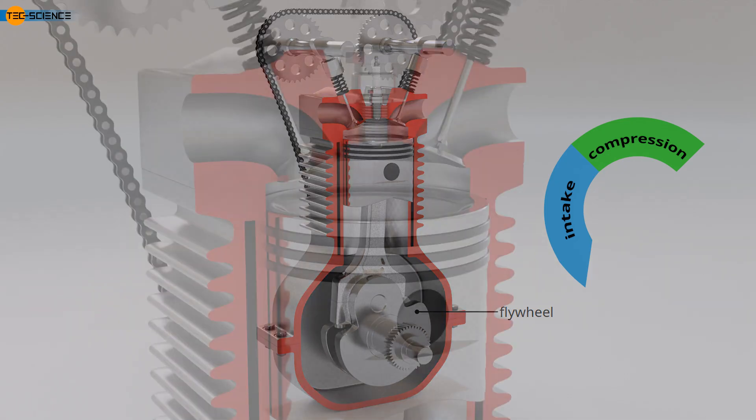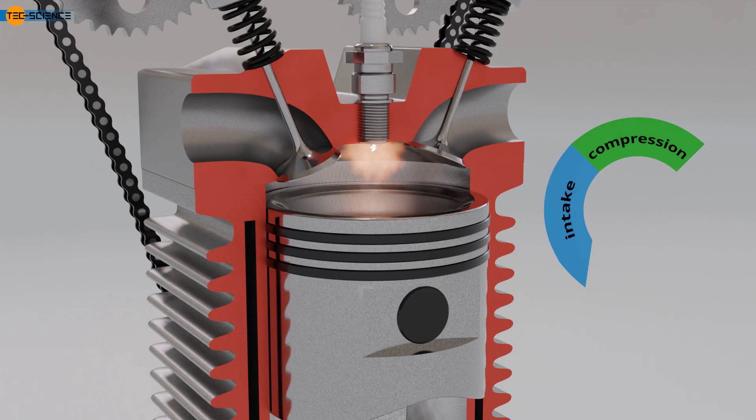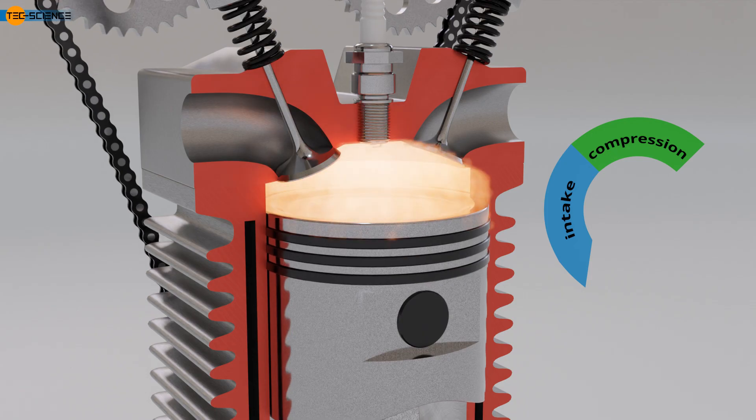Just before reaching the top dead center, ignition occurs in gasoline engines via the spark plug. In diesel engines, at this point, the fuel injection begins, which ignites spontaneously due to the high temperatures from the compression process. Unlike spark ignition in gasoline engines, diesel engines use what is known as compression ignition. In both cases, the ignition of the fuel-air mixture occurs shortly before reaching the top dead center. The reason for this is that the explosion is a timed process in which the flame front propagates at speeds of up to 200 meters per second. The most effective pressure effect occurs only when the majority of the fuel mixture has been ignited. By this time, the piston has already passed the top dead center. The exact timing of the ignition depends on the engine's speed.